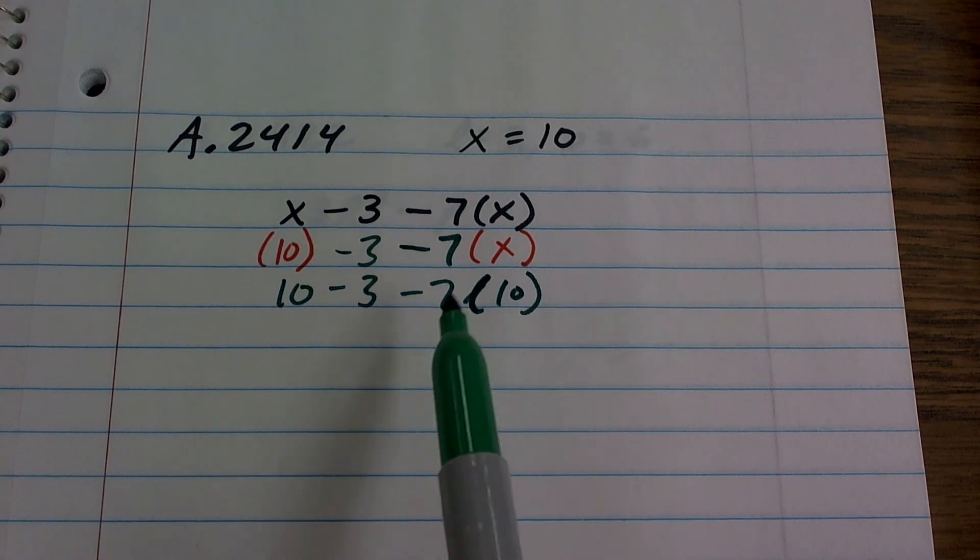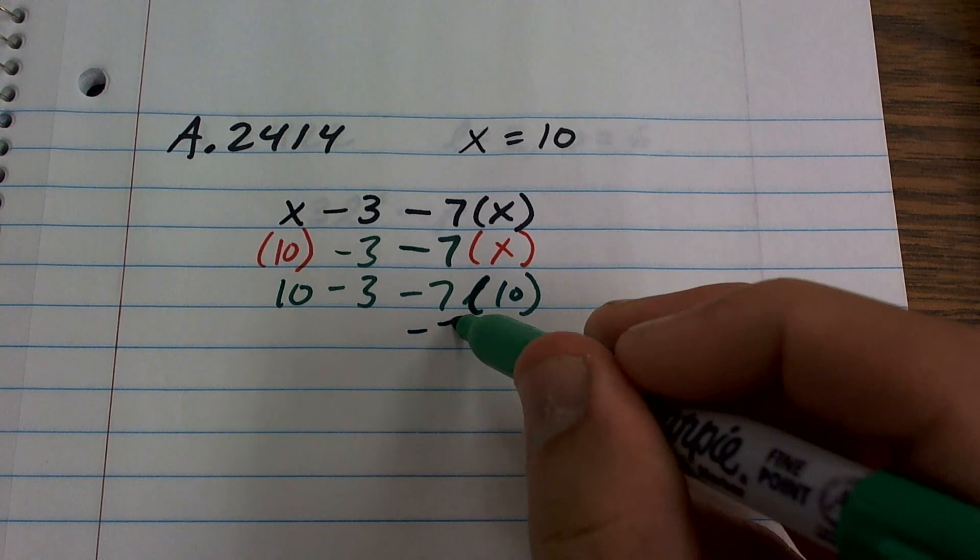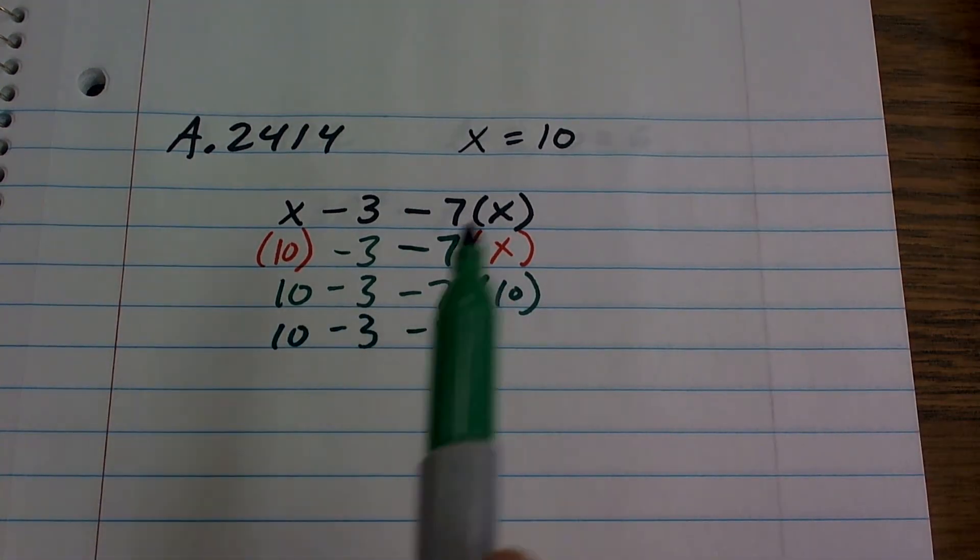So now, by using my order of operations, I have to do my multiplication first, right? Negative 7 times 10 is a negative 70. Then I have 10 minus 3.